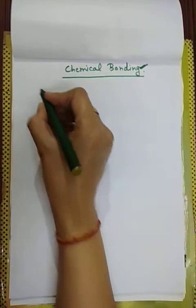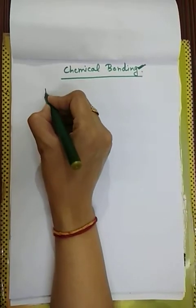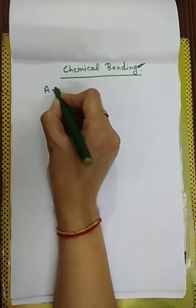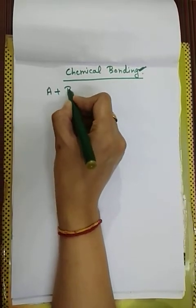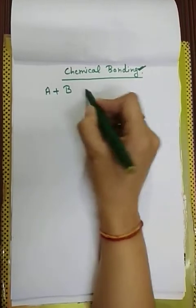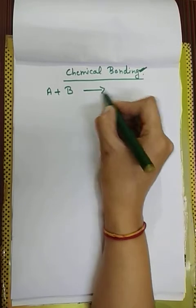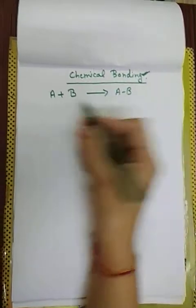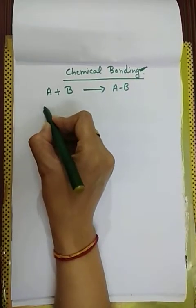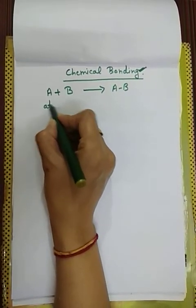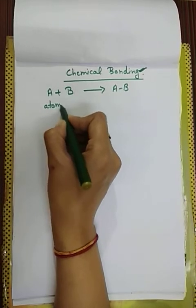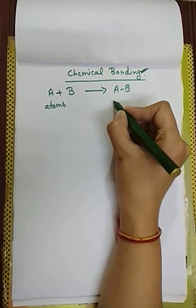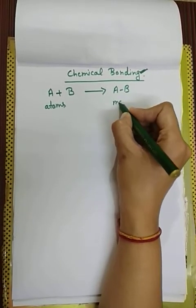Now, how do we understand this? We have an atom A and another atom B, and the product formed is a molecule. So these two are atoms, and the product is a molecule.